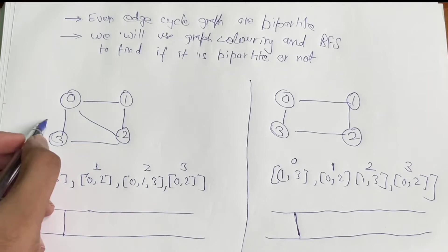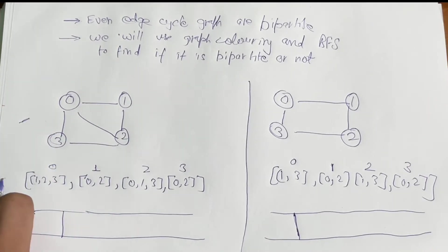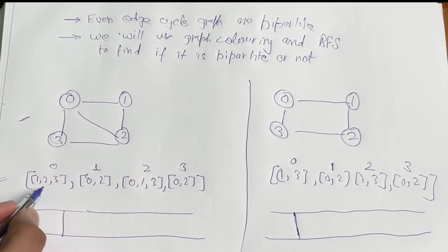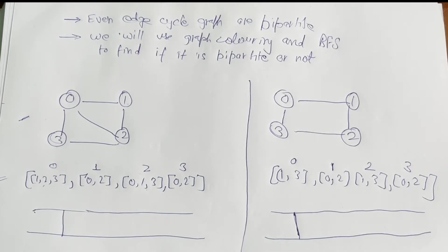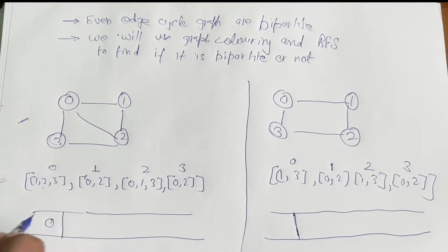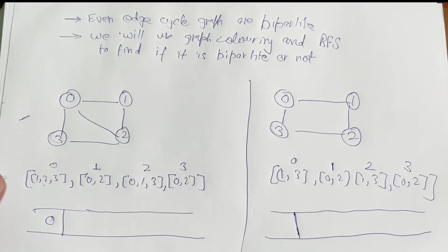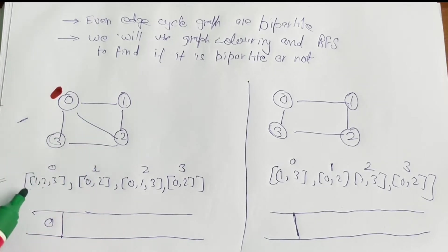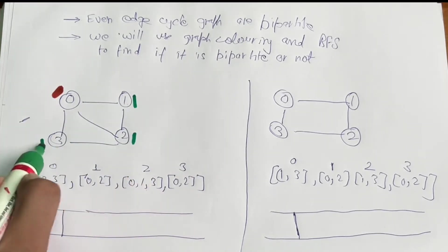We have the given graph and its adjacency list. The neighbor of node 0 is 1, 2, and 3. We will start by pushing node 0 into the queue and coloring it red before pushing. After fetching it from the queue, we fetch its neighbors — 1, 2, and 3 — and color them the opposite of 0, which is green.